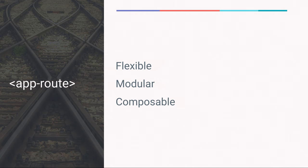App route is flexible, modular, and composable. It doesn't just work with web components — it works like web components. It can know about your entire app, or it can just be responsible for routing one small section of your application.